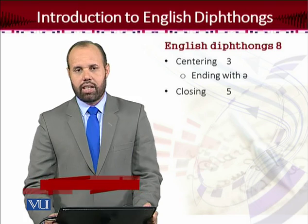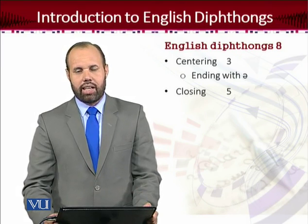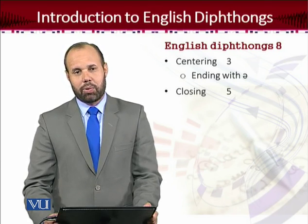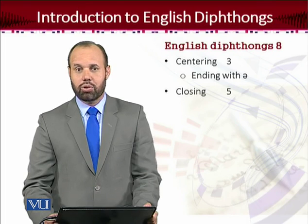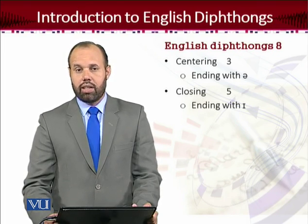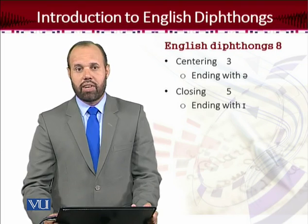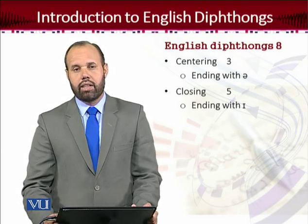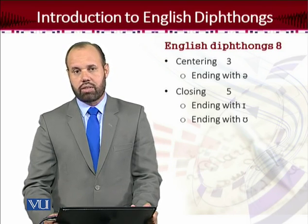The second category is closing diphthongs. Closing diphthongs mean that the tongue is moving up and rising towards the roof of the mouth, which is the palate. The ending sounds within closing diphthongs are closed vowels. Closing diphthongs are further divided into two subcategories: those ending with an /ɪ/ sound, and those ending with an /ʊ/ sound. These are the two subcategories of closing diphthongs.